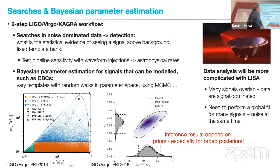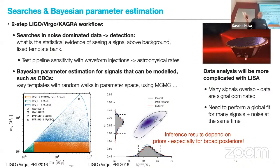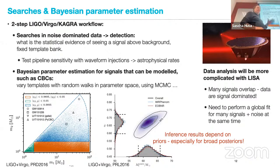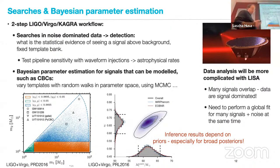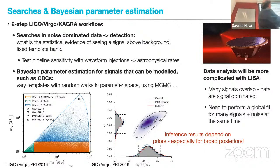Because you're using Bayesian methods, results depend on the priors you set — which have some astrophysical motivation — and if posteriors are broad, results will depend on what priors you assume. For the first detection, two models were used: IMRPhenomX and EOBNR, and luckily they give very similar results, providing confidence in the analysis. The speaker notes responsibility for one of these models.